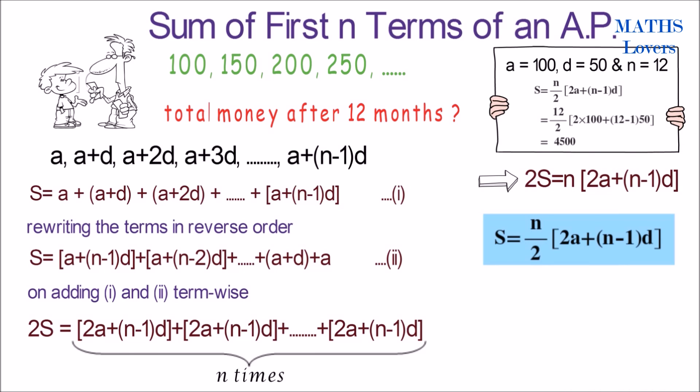We also know that the nth term or last term is equal to a plus n minus 1 times d. So we can write S equals n by 2 times a plus l, where l is the nth term of the AP. It's easy to calculate by this formula when the last term is given.